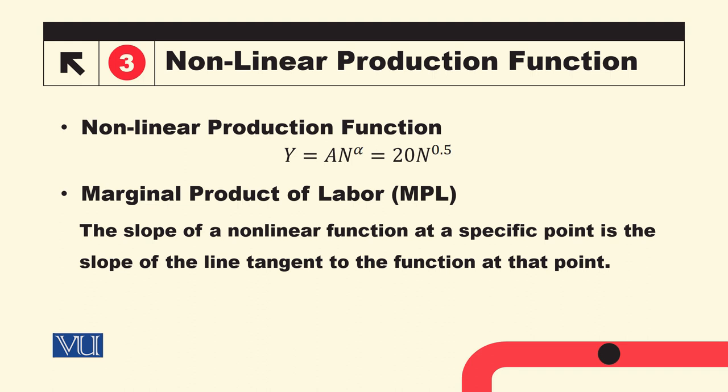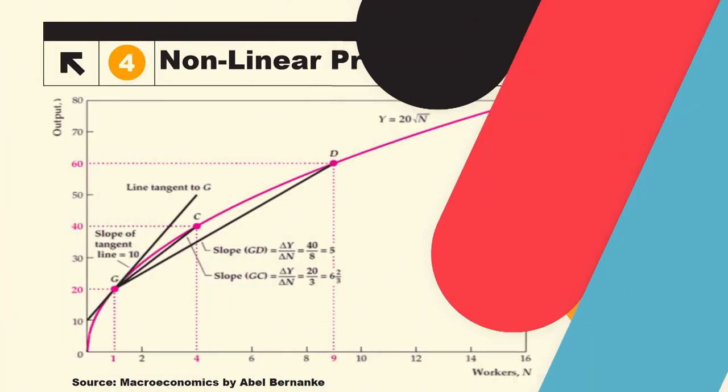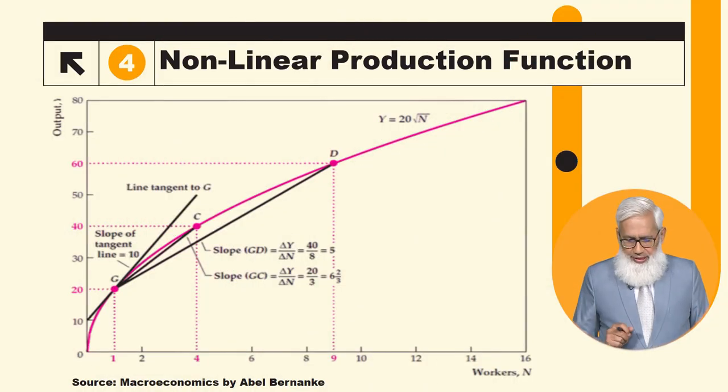So margin product usi tarah se is production function ka graph ka slope ho ga at any particular point. That will give us the margin product of labor at that point. So is ko hum discuss kertai hai with the help of this graph.